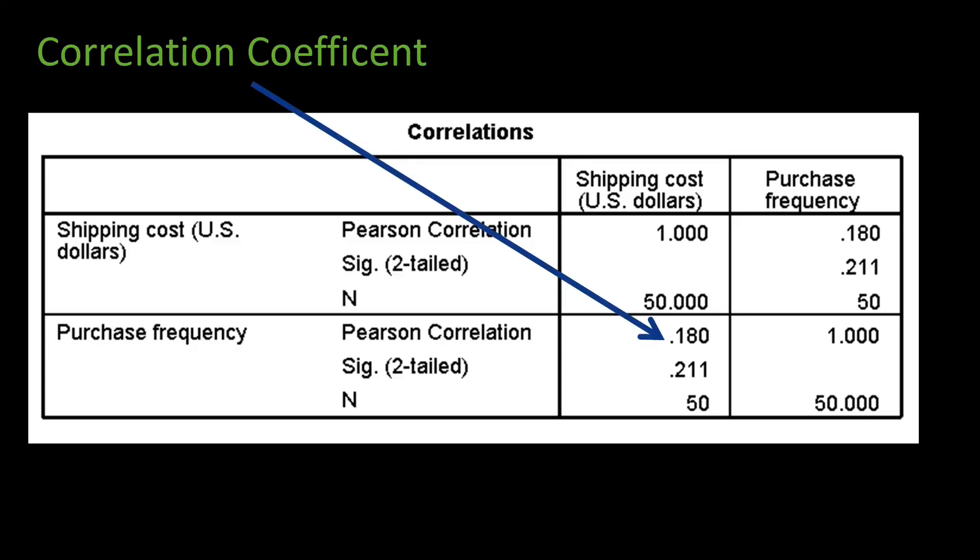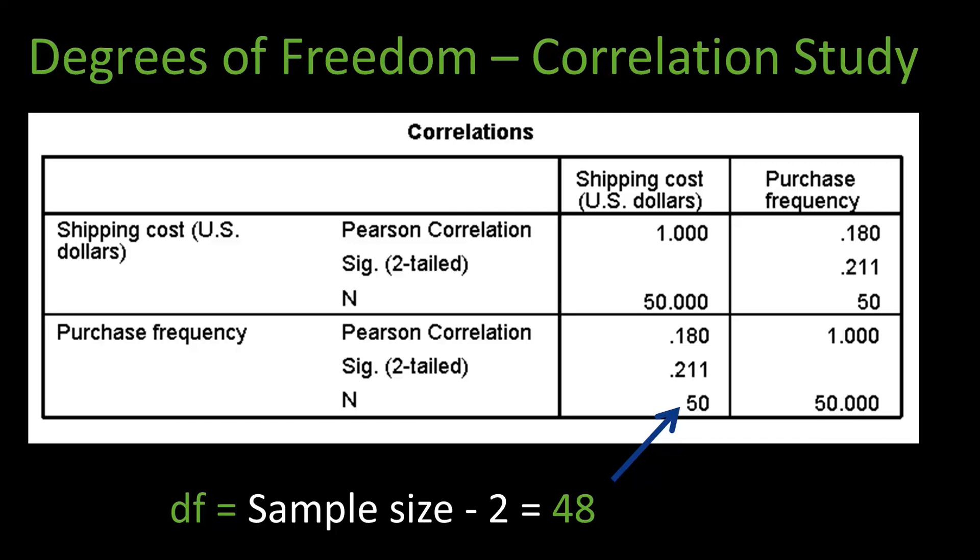Here is the correlation coefficient and here is the probability with the sample size of 50. Now before we can report this result in APA style, we need to compute one more statistic called degrees of freedom.